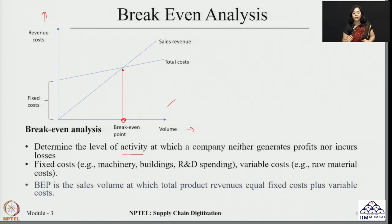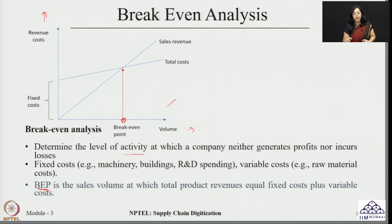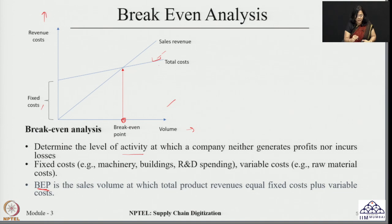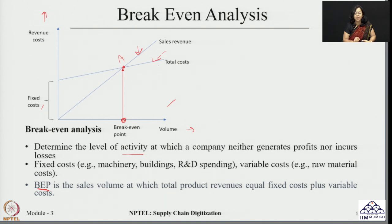How do we calculate the break-even point? The break-even point (BEP) is the sales volume at which the line representing total cost — which is the sum of fixed cost and variable cost — intersects with the line for sales revenue. This intersection point, labeled point A, is the break-even point. When brought down to the x-axis, it tells us the exact volume at which the company faces neither profit nor loss.